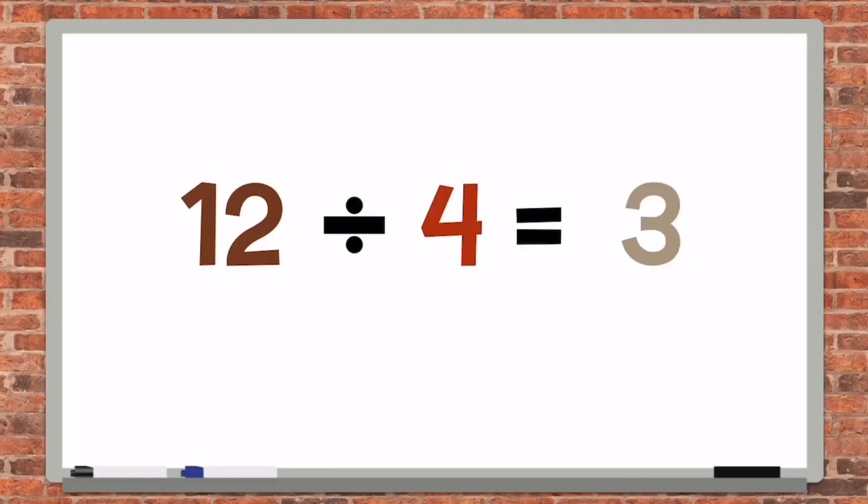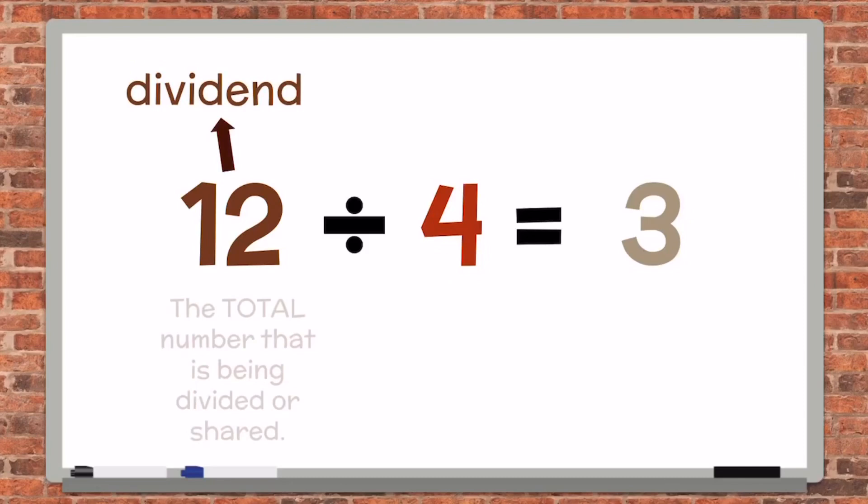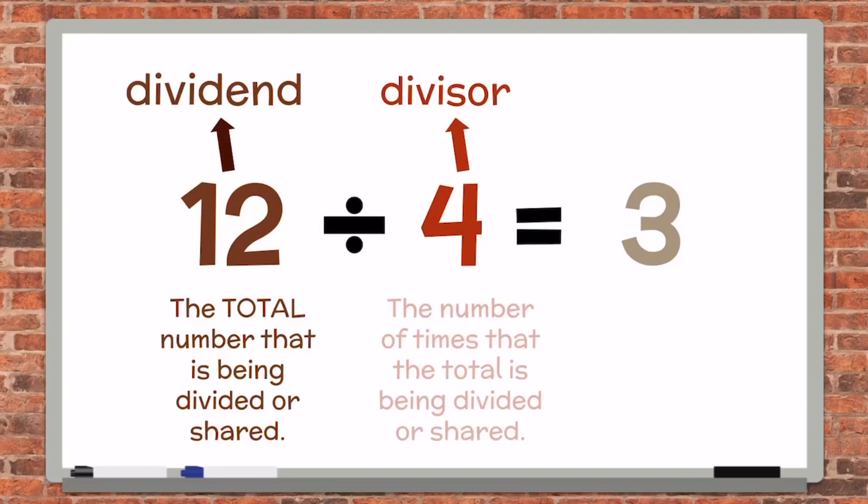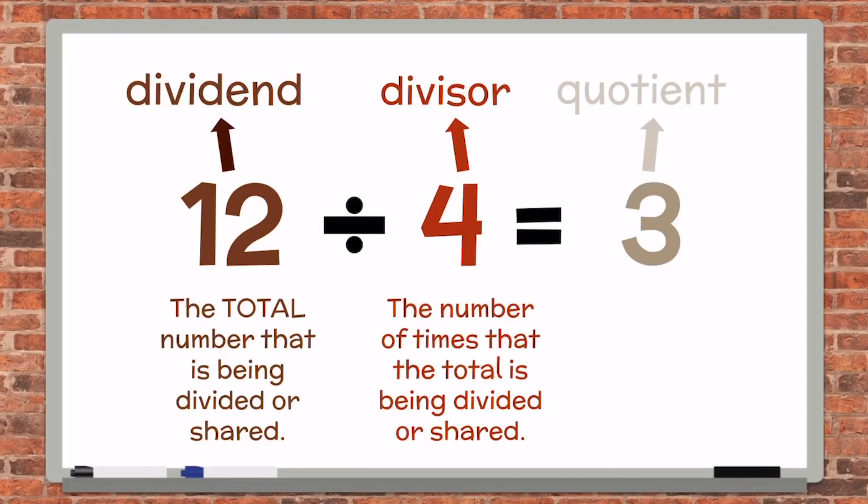Let's start with vocabulary. 12 divided by 4 equals 3. The 12 is the dividend. The dividend is the total number that is being divided or shared. The 4 is the divisor. The divisor is the number of times that the total is being divided or shared. 3 is the quotient. The quotient is the result or answer to a division problem.